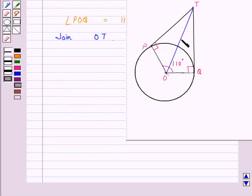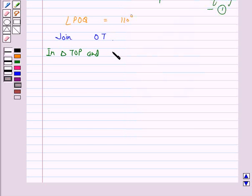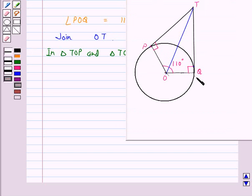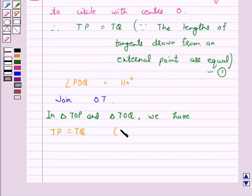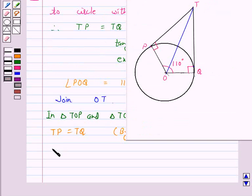So in right triangles TOP and TOQ we have: TP equal to TQ by statement 1, OT is equal to OT common. So by RHS, triangle TOP is congruent to triangle TOQ.